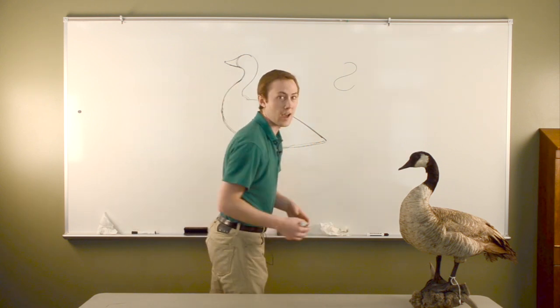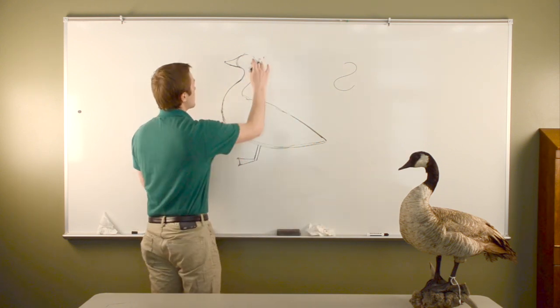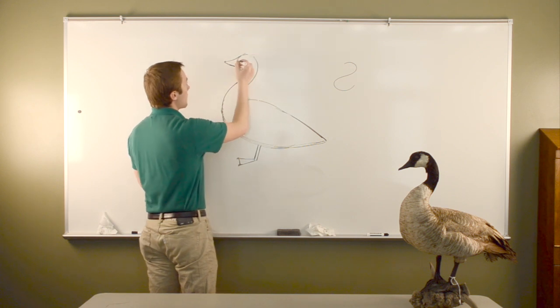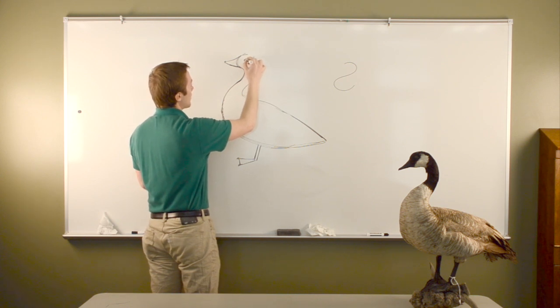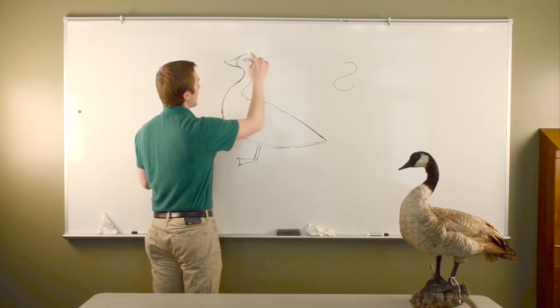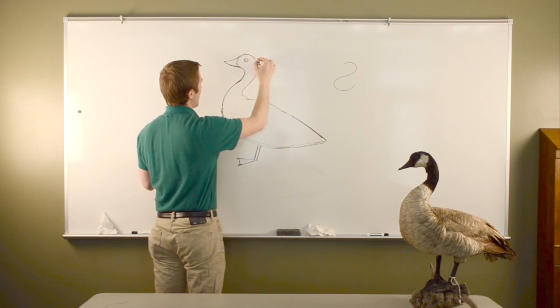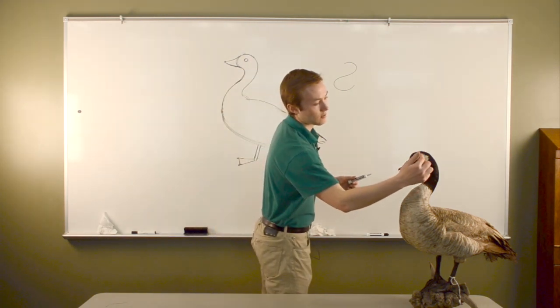Let's start off with his head. Let's start with that eyeball. His eyeball should go right about in the middle of his head from his bill, right about there. So let's make a nice circle for his eyeball. Remember, it's got to be small. Geese don't have giant eyeballs.